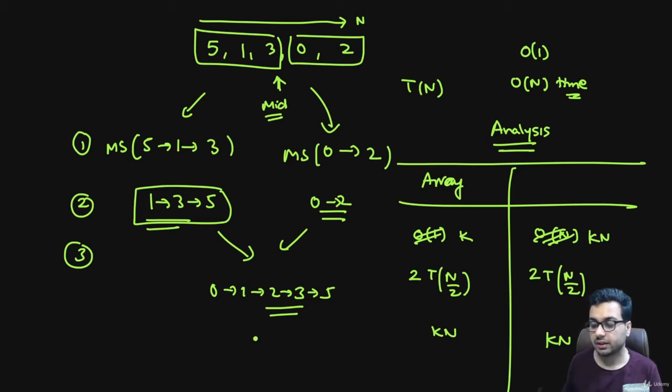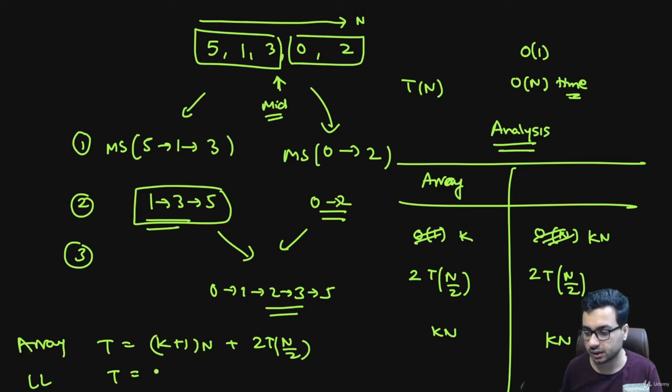The total time for an array is k plus 2kn, so that is (k+1)n plus 2T(n/2). This is for an array. For a linked list it is going to be kn plus kn, that is 2kn plus 2T(n/2).